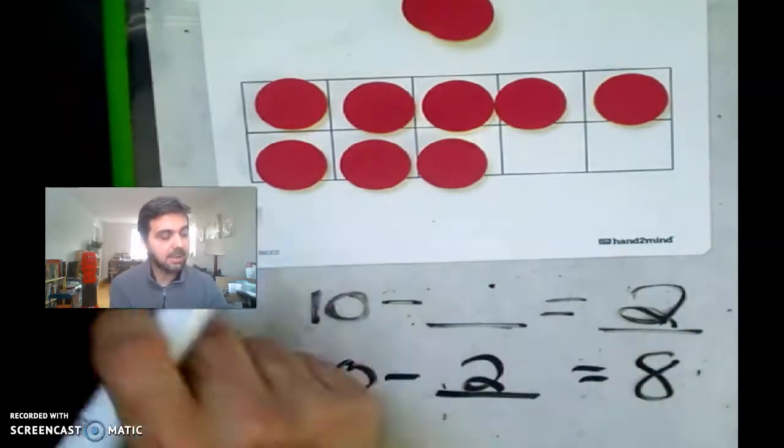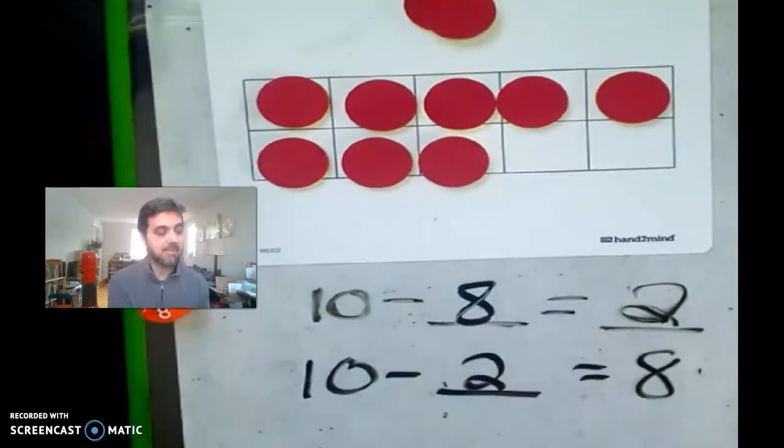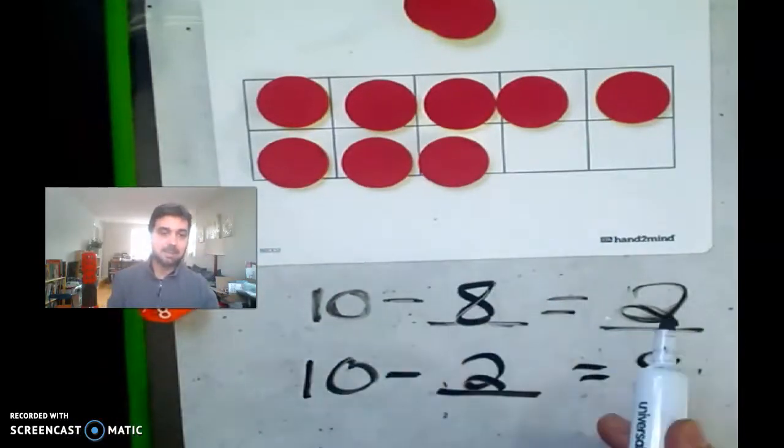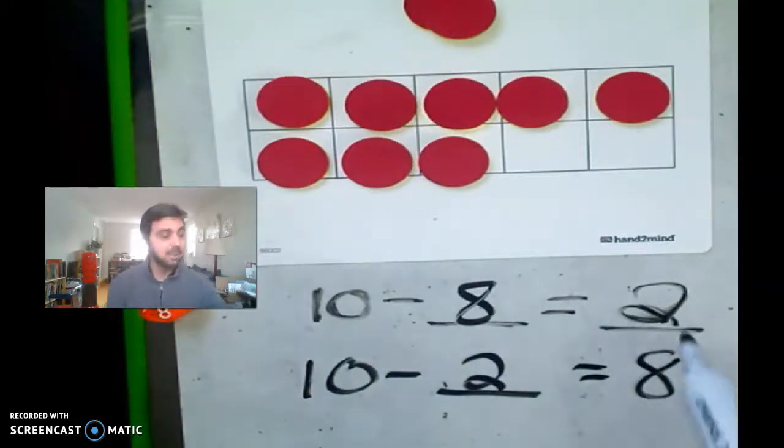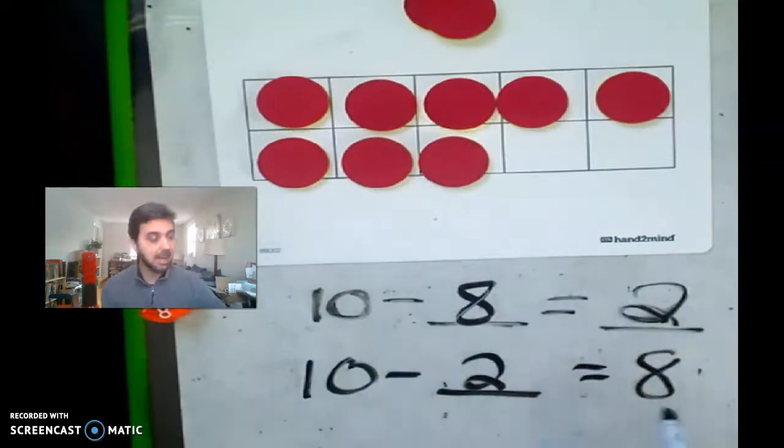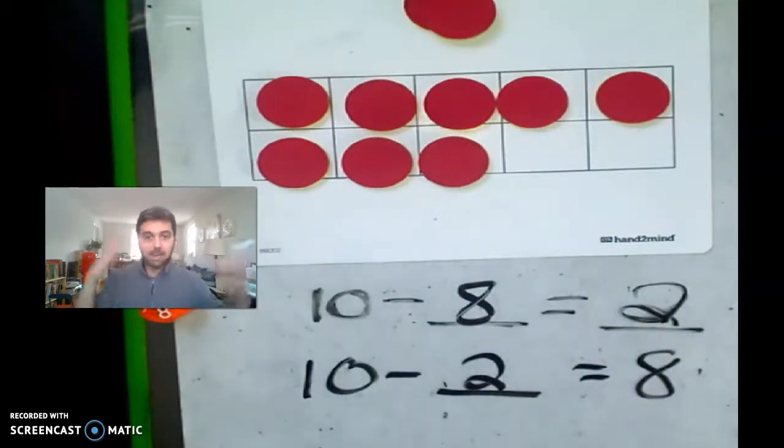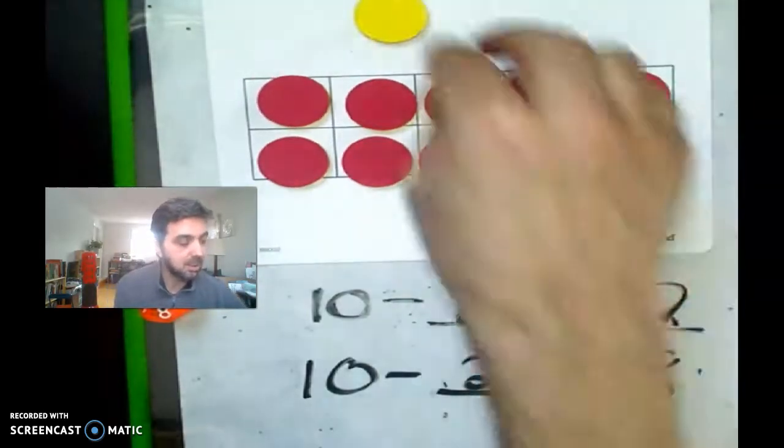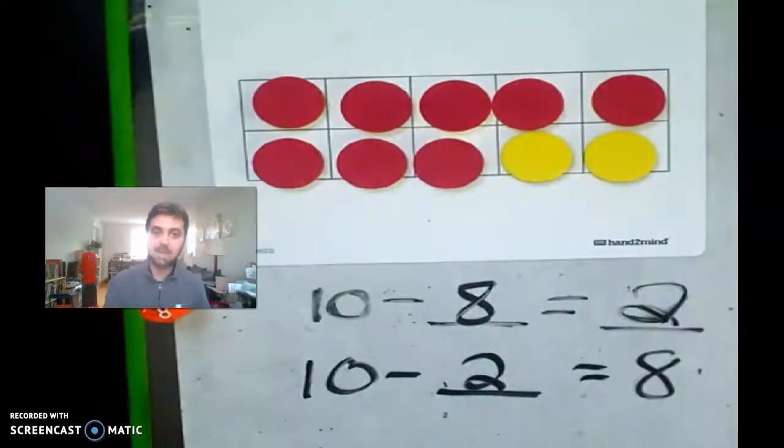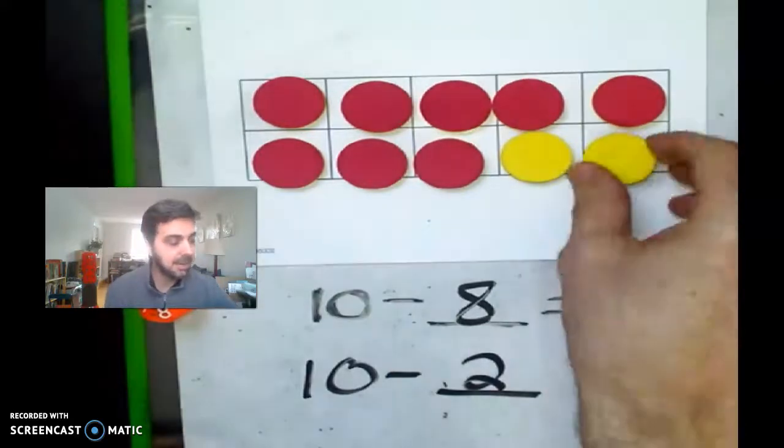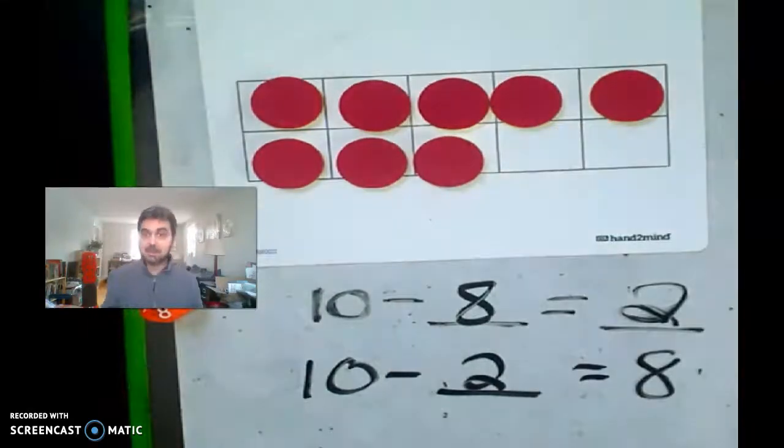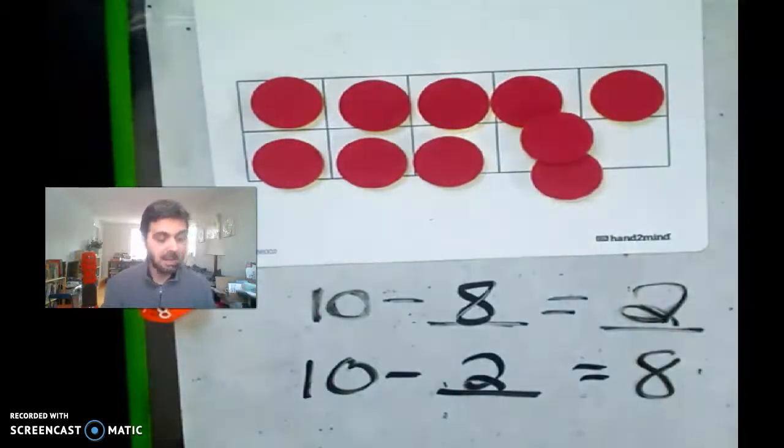And that makes sense because we also know that 2 plus 8 is 10. So if I were to add these 8 back on to plus 8, it's going to give me 10, okay? And we also know that if I were to do 10 minus 2, so I'm just going to take away 2, I'm left with 8. So we call these fact families, boys and girls. If we know that 10 minus 8 is 2, then 10 minus 2 is 8. And 2 plus 8 is 10, and 8 plus 2 is 10. They're all connected. And you can see it, right? 8 plus 2 is 10. And 10 take away 2 is 8.